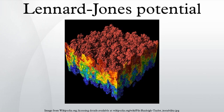The Lennard-Jones potential can be further approximated by the potential later proposed by R. A. Buckingham, in which the repulsive part is exponential. The LJ potential is a relatively good approximation and due to its simplicity is often used to describe the properties of gases, and to model dispersion and overlap interactions in molecular models. It is particularly accurate for noble gas atoms and is a good approximation at long and short distances for neutral atoms and molecules.